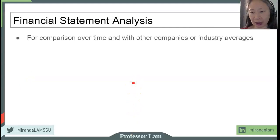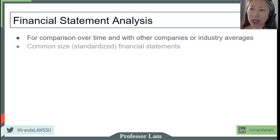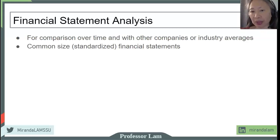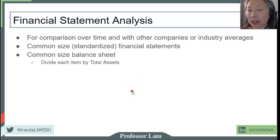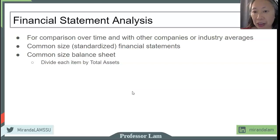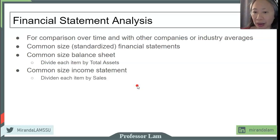There are a number of factors we want to take into account. One is that we want to ensure we can compare the performance of our company over time and against other companies such as its main competitors as well as the industry as a whole. To do that, we can create something called common size or standardized financial statements — both a standardized income statement and standardized balance sheet. For the common size balance sheet, we convert the numeric values into a percentage by dividing each item by total assets. For the common size income statement, we convert each dollar amount into percentages by dividing each item by sales.